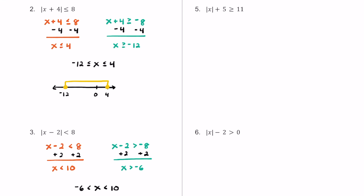Number 5 is the first one that's different for a couple of reasons. The absolute value is not isolated — we have an additional plus 5 outside of it. Also, we have our first greater than symbol. So first, we isolate the absolute value by subtracting 5 from both sides. We get the absolute value of x is greater than or equal to 6. Now we write two inequalities: x is greater than or equal to 6, and x is less than or equal to negative 6, flipping the inequality and using the opposite of 6.